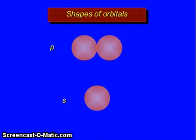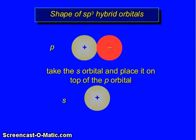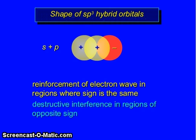This is the S orbital and this is the p orbital. Nodal properties of orbital: positive for S, and positive and negative for p. Take the S orbital and place it on top of the p orbital. Reinforcement of electron waves in regions where the sign is the same; destructive interference in regions of opposite sign.